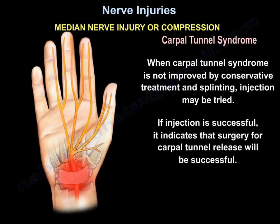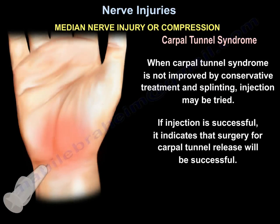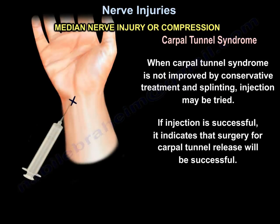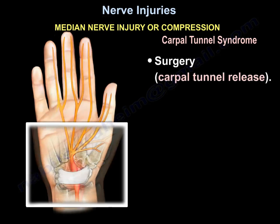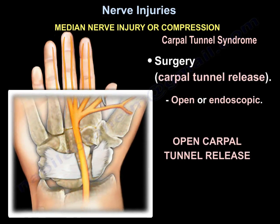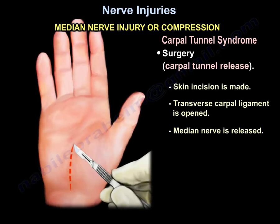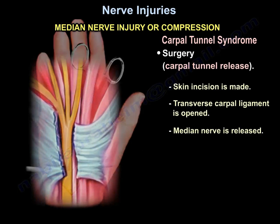When carpal tunnel syndrome is not improved by conservative treatment and splinting, injection may be tried. If injection is successful, it indicates surgery for carpal tunnel release will be successful. The surgery is performed by cutting through the transverse carpal ligament to release the compressed nerve. A skin incision is made, the transverse carpal ligament is opened, and the median nerve is released.